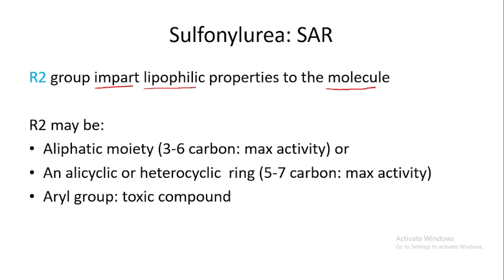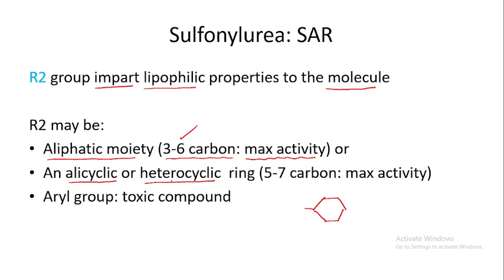The R2 group may be an aliphatic moiety of 3 to 6 carbons for maximum efficacy, or it can be an alicyclic or heterocyclic group. Examples include the cyclohexyl ring seen in acetohexamide, or a heterocyclic seven-membered nitrogen-containing ring as used in some agents. Five to seven membered rings give maximum activity.